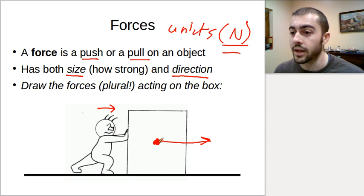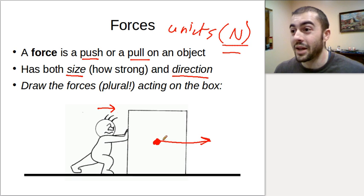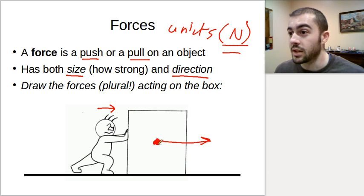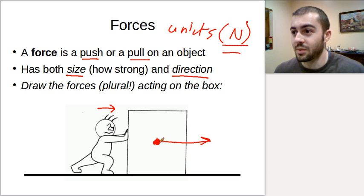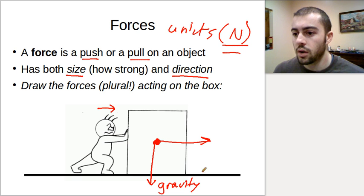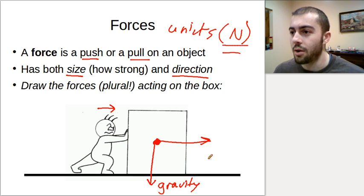Other forces acting on the box: the box isn't just floating in the air, right? It's sitting on the ground. So something is pushing it downwards, keeping it on the ground - otherwise it would be a lot easier to push, or the guy could just pick it up and carry it really easily. So that force is gravity. We have a downwards force that's gravity that's keeping this box on the ground.